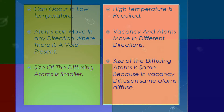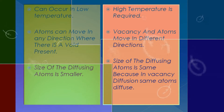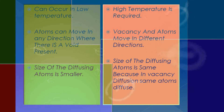In vacancy diffusion, the vacancy and atoms move both in opposite directions. But in interstitial diffusion, atoms can move in any direction. Also, the size of the diffusing atoms is smaller in interstitial diffusion — because if the atoms were the same size as lattice atoms, they would replace them rather than fit into the voids. So the impurity atoms need to be smaller.